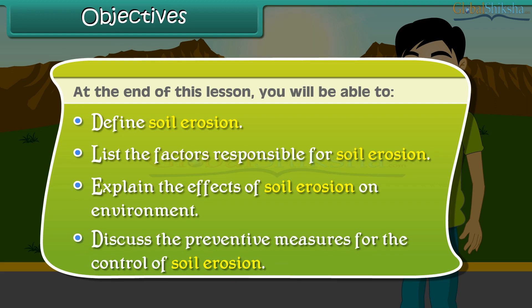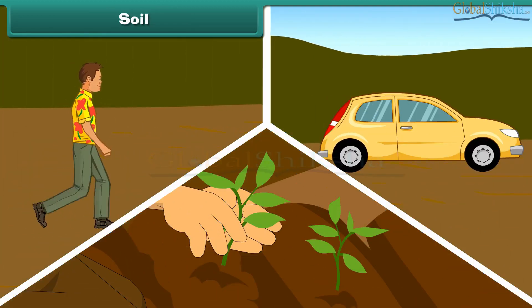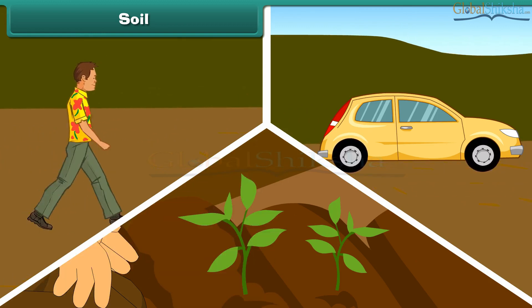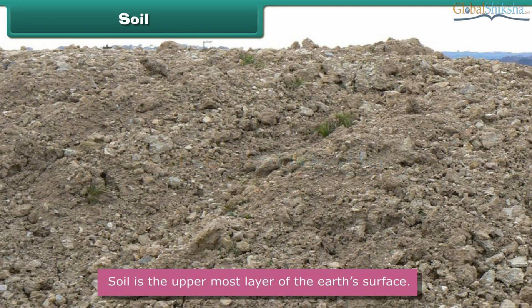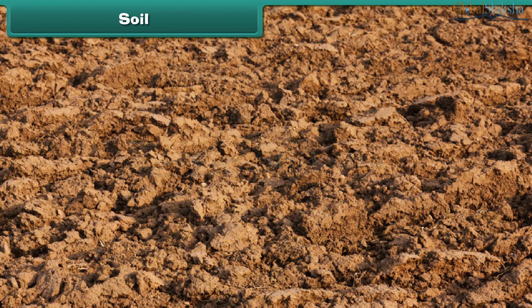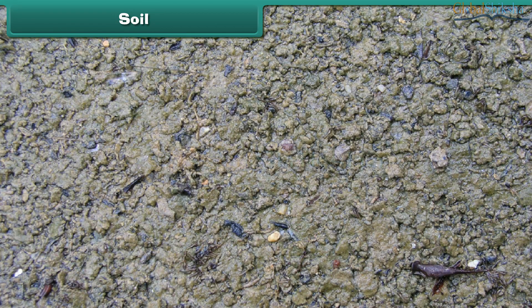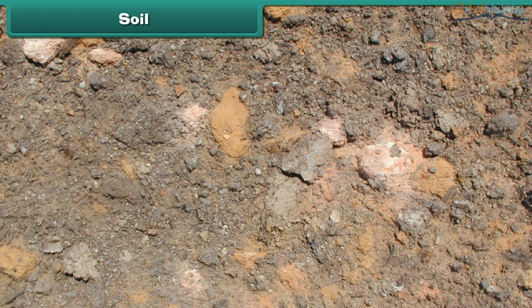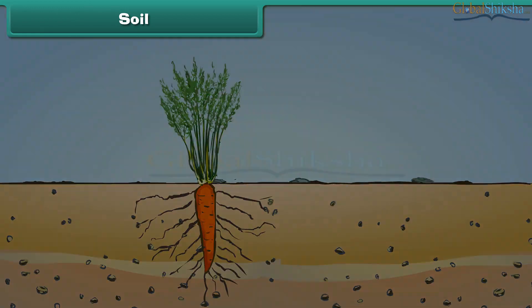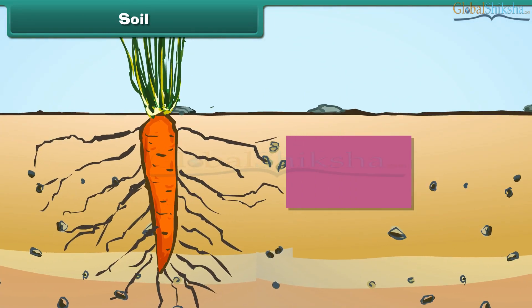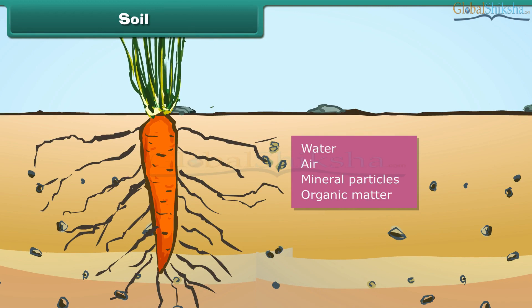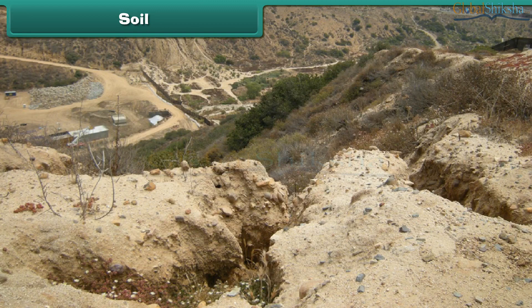It is everywhere — we walk on it, we drive on it, and we grow plants on it. Wondering what it is? It is soil. Soil is the uppermost layer of the earth's surface. It consists of a mixture of rock finely ground into powder, water, air, minerals, and a variety of living and dead life forms. It serves as a natural medium for growth of plants. Most soils contain four basic components: water, air, mineral particles, and organic matter.